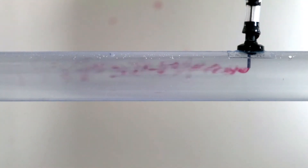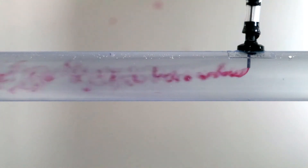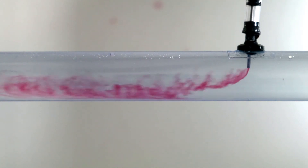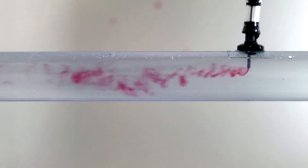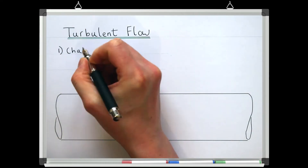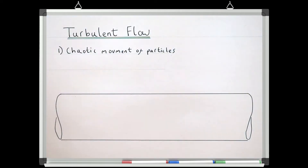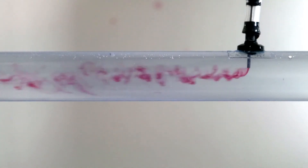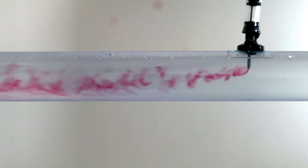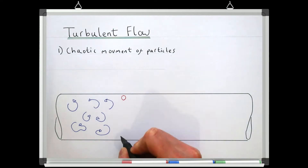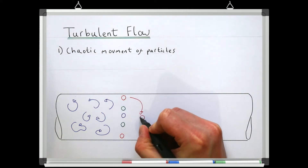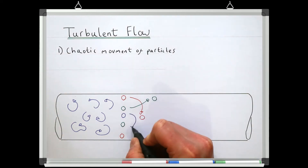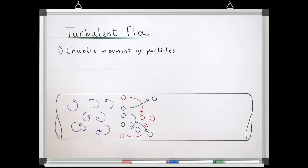But as we increase the flow's velocity, there will be some critical point where the flow becomes turbulent. Dye being injected into a turbulent flow shows that the flow is behaving very differently. Turbulent flow is characterised by chaotic swirling eddies, and these eddies will transport fluid particles in all three dimensions across the pipe. So if we imagine a line of particles across a turbulent flow, because of these chaotic swirling eddies, particles will not stay in line but will be transported all over the pipe.